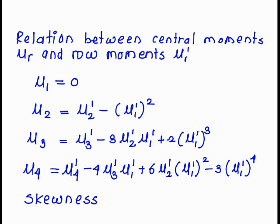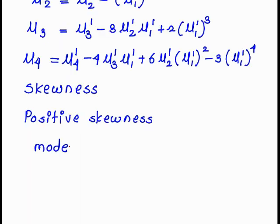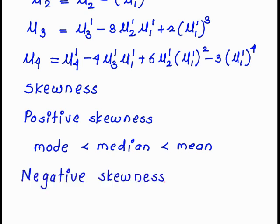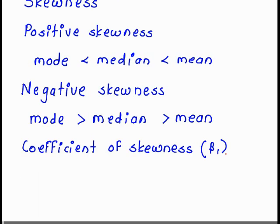Now we get an idea about skewness — what is positive skewness, negative skewness, and the coefficient of skewness. If mode is less than median is less than mean, then it is called positive skewness. If mode is greater than median is greater than mean, then it is called negative skewness.